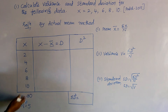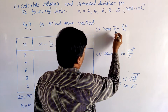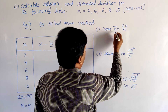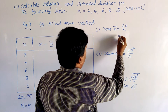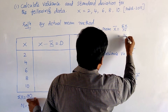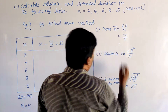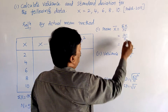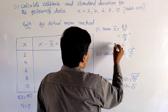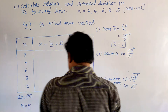Using these values, we calculate the mean or average. x̄ = σx / n = 30 / 5. So we get x̄, the mean, equal to 6.